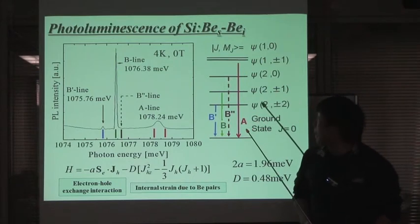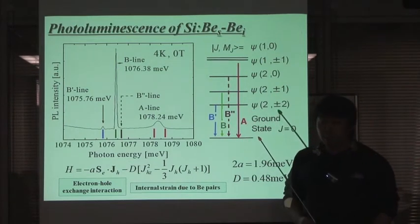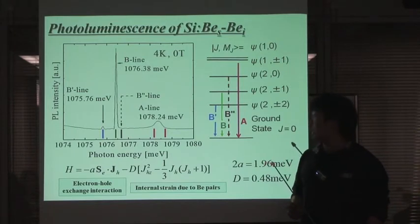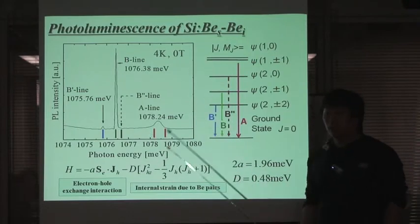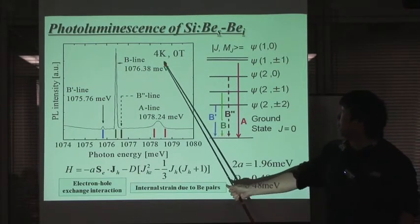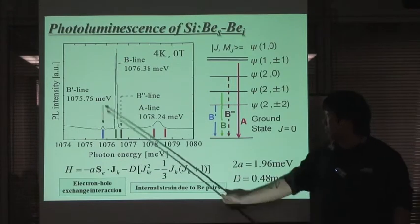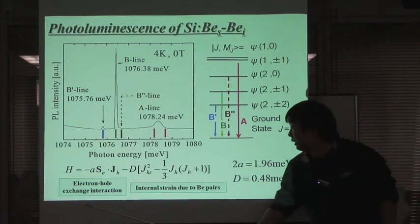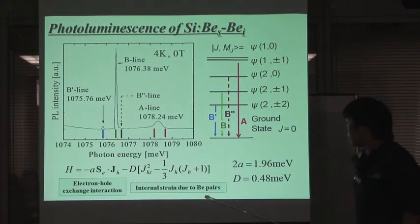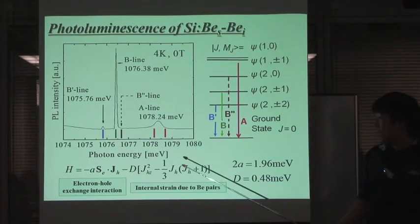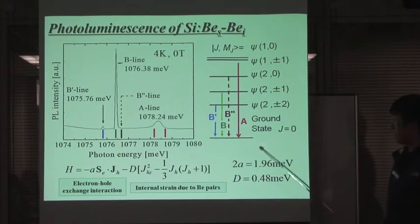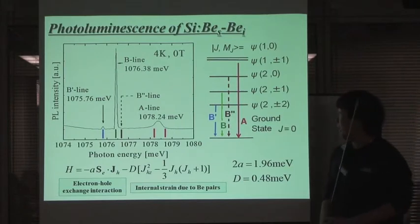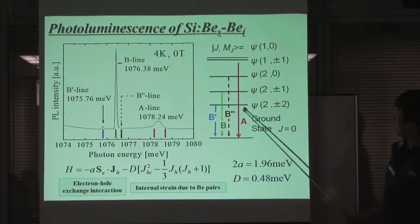This slide shows the no-phonon lines from barium pairs in silicon. No-phonon lines mean luminescence without phonon assistance. Therefore, no-phonon lines are reflected by the quantum states of electrons and holes bound to the impurities. This figure shows no-phonon lines from barium pairs in silicon without magnetic field at 4 Kelvin. Several no-phonon lines appear because of electron-hole exchange interaction and internal strain due to the barium pairs. These vertical lines are eigenvalues of the Hamiltonian when these fitting parameters are used. B', B', and A' have two degenerate, two degenerate, and three degenerate states respectively.